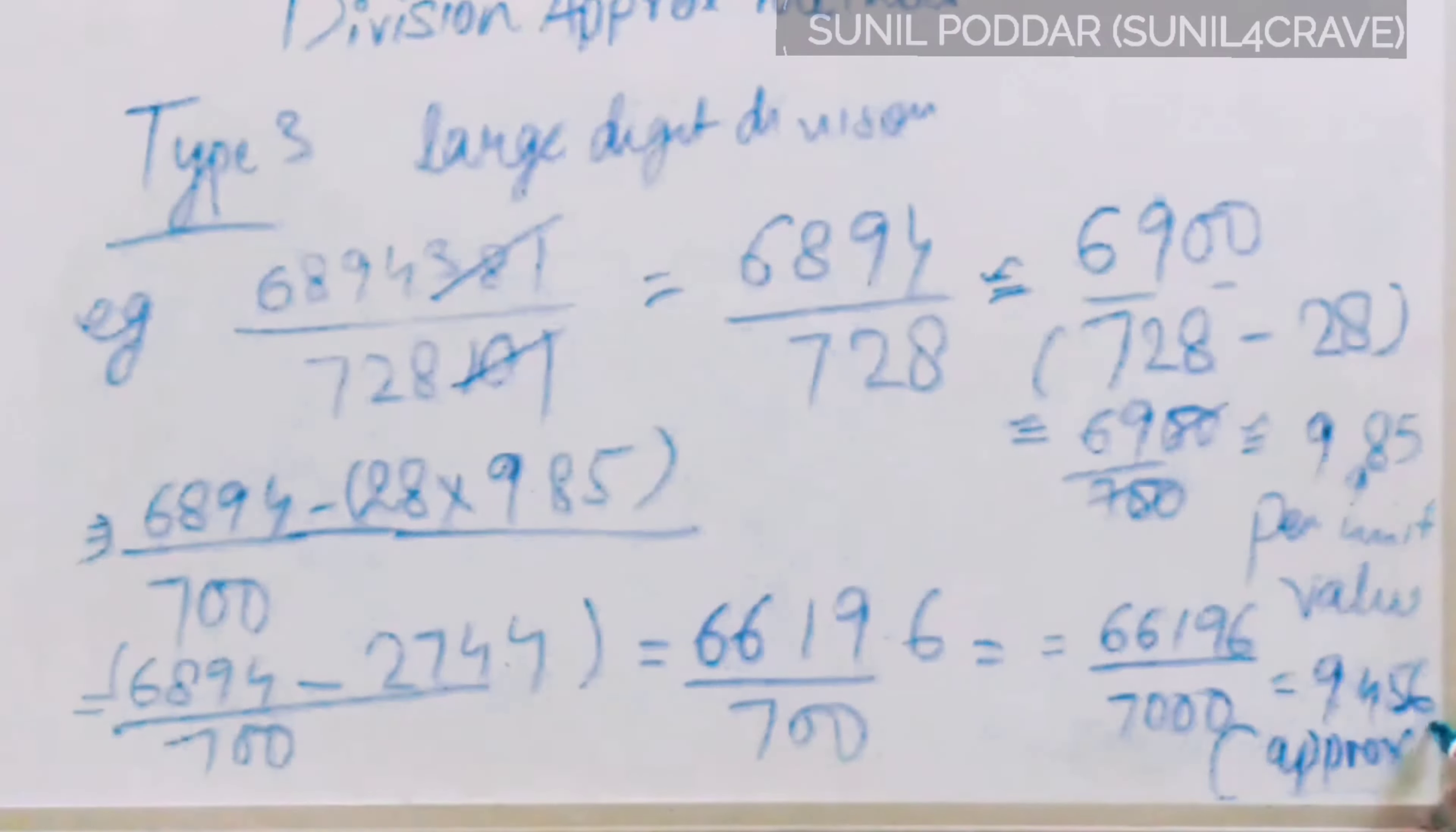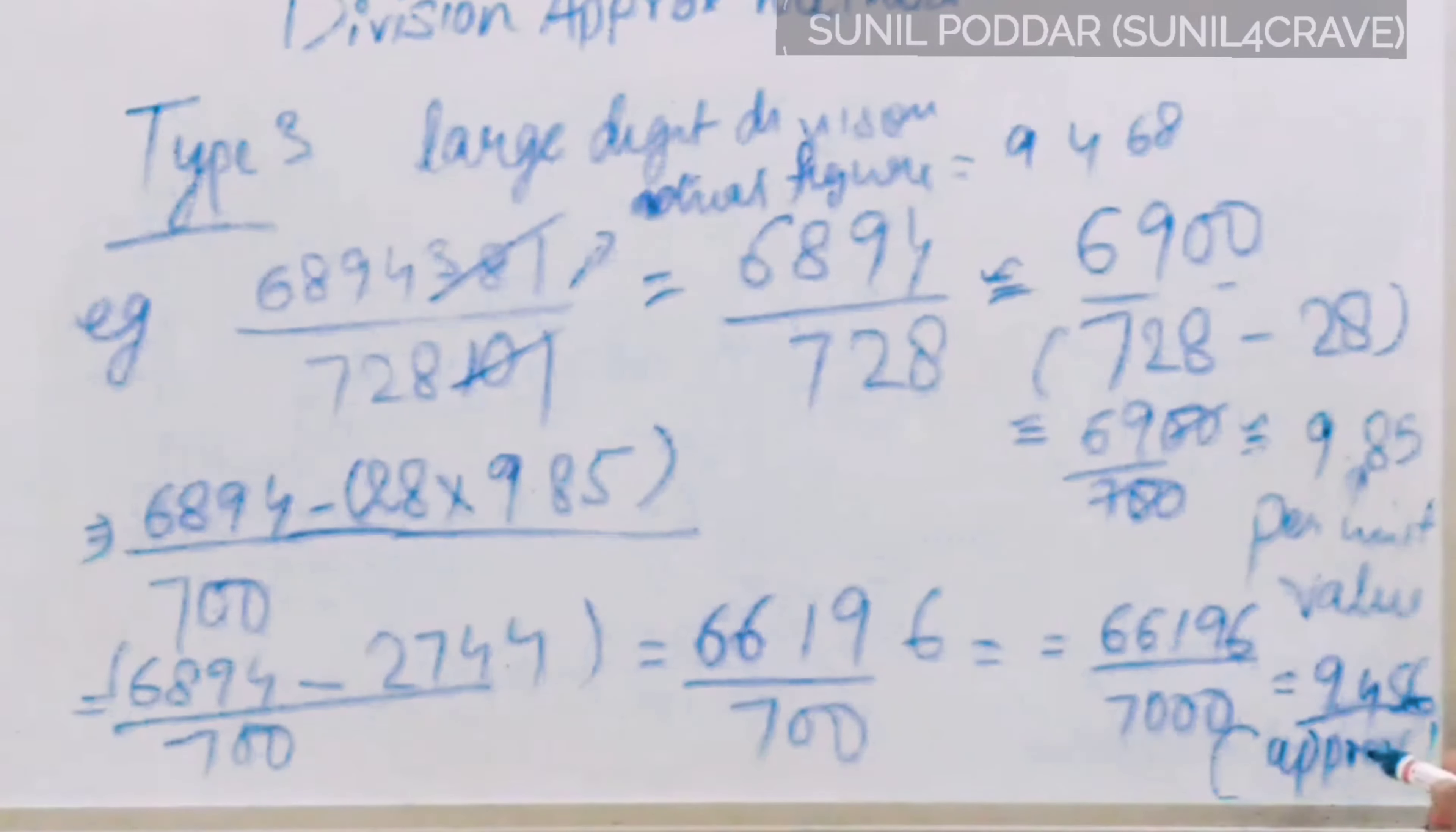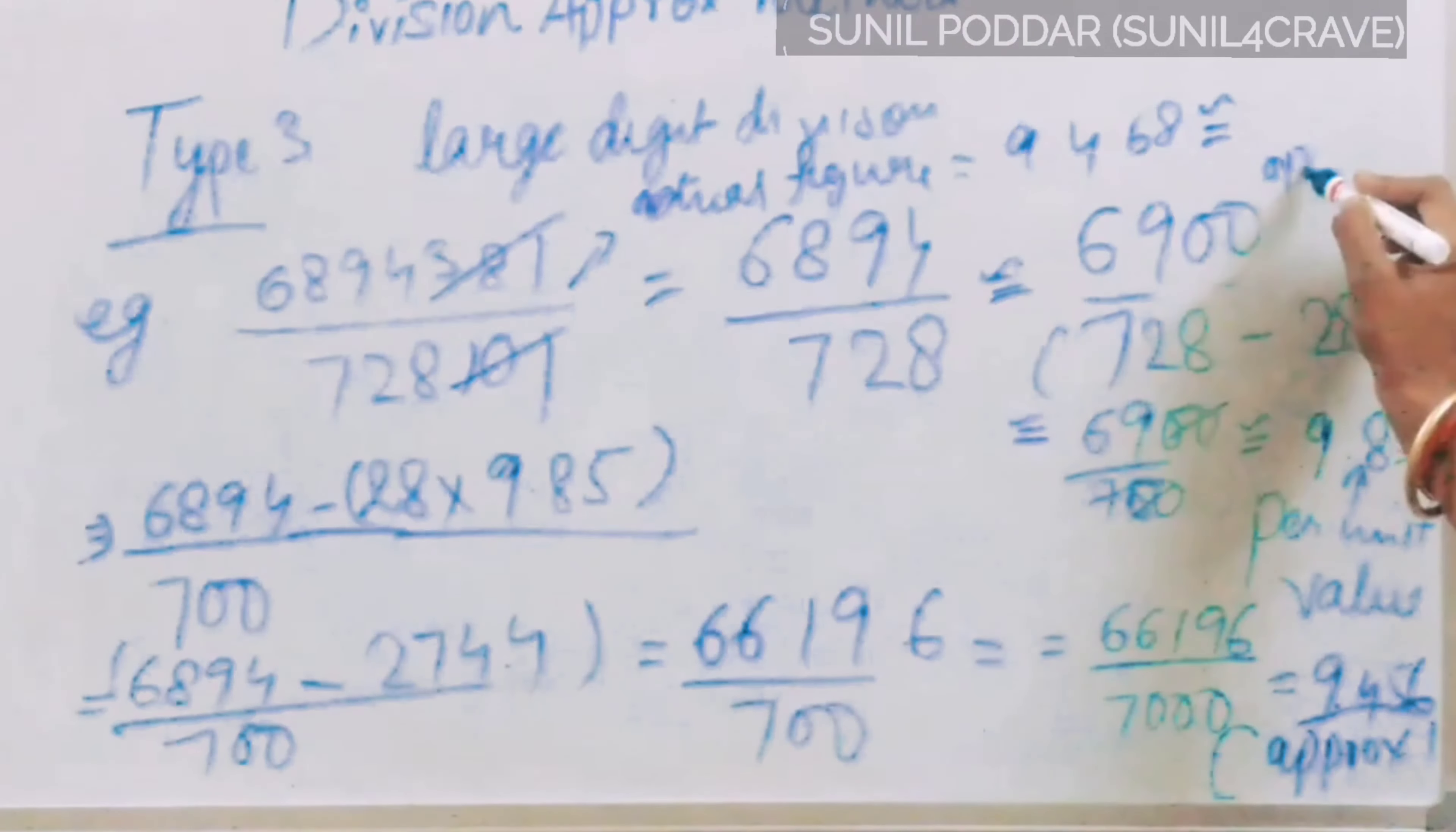Let's check with the actual answer. When you divide 6,894,381 with 728,101, the actual figure you will get is 9.468. So that is near to approximate 9.456. Only the 0.001 difference is there.